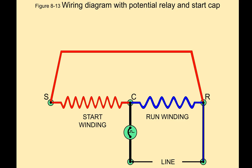Let's take a look at the wiring diagram of a potential relay and start capacitor. So here is our compressor, line voltage coming in here, common start and run, run winding, start winding. These are our compressor terminals.